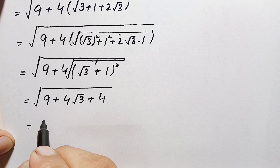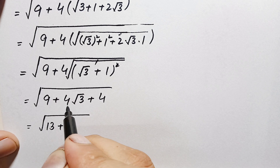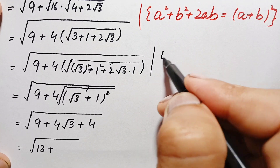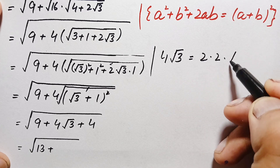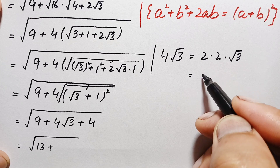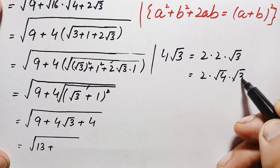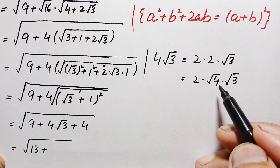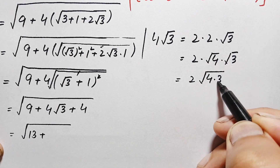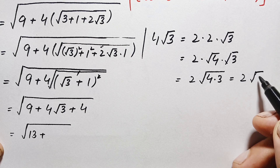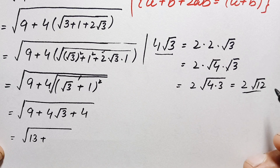Next, 9 plus 4 equals 13, so this becomes square root of 13 plus 4 times square root of 3. We can write 4 times square root of 3 as 2 times 2 times square root of 3, where 2 equals square root of 4. Using the product rule, this is 2 times square root of 4 times 3, which equals 2 times square root of 12. So the value of 4 times square root of 3 is the same as 2 times square root of 12.